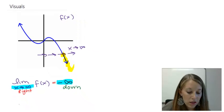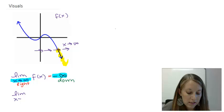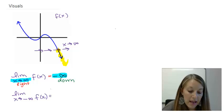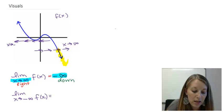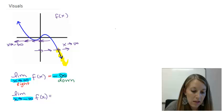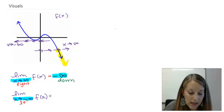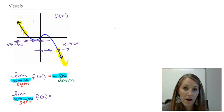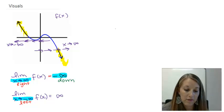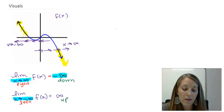Now let's look at the limit as X is approaching negative infinity of this function. Negative infinity means what's happening on the left side of this graph as we keep going farther and farther out. If we look at our graph, it's going up and up and up forever. Since it's getting larger, our answer is positive infinity because it is going up on that part of the graph.